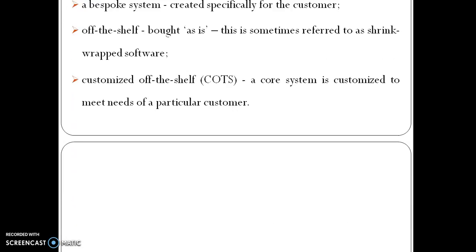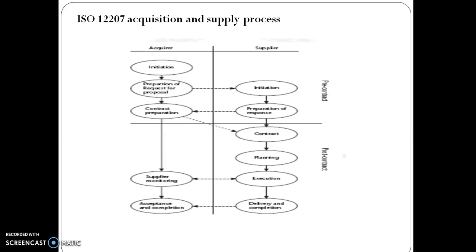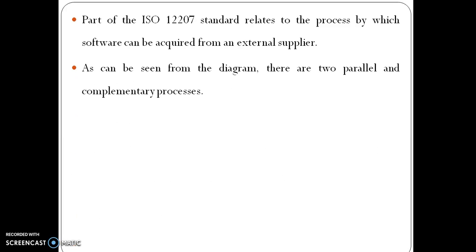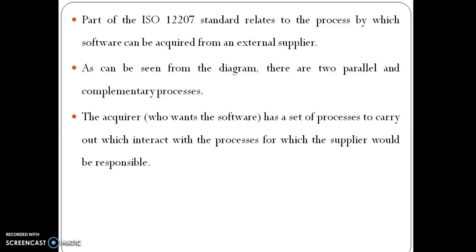Another option is customized off-the-shelf software. ISO 12207 covers the acquisition and supply process. The figure represents the actual acquisition and supply process, part of the ISO 12207 standard related to the process by which software can be acquired from an external supplier. There are two parallel and complementary processes the acquirer carries out, which interact with the supplier's processes.